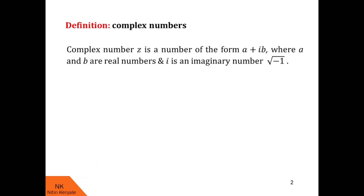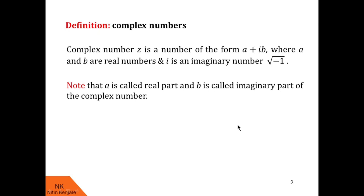A complex number z is the number of the form a plus ib, where a and b are both real numbers and i is an imaginary number whose value is root of minus 1. Here we call a as the real part of the complex number and b as the imaginary part of the complex number. Following are some examples of complex numbers.